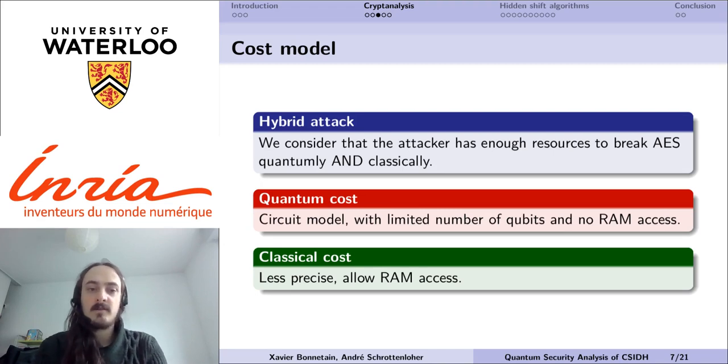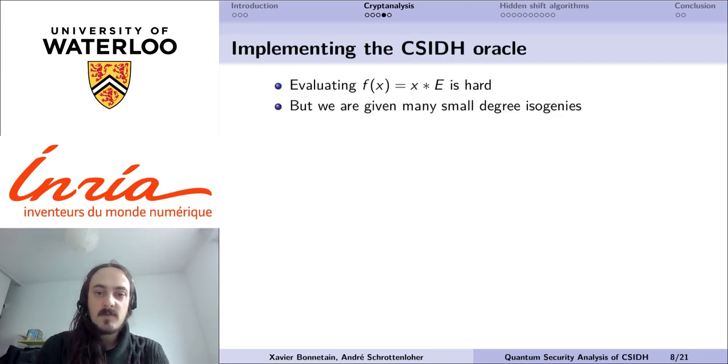For more detailed cost metrics, for the quantum part of our computations, we consider the circuit model. We try to have a limited number of qubits, as limited as possible, and we do not consider quantum RAM access, contrary to, for example, what Peikert has proposed in his analysis of CSIDH. For the classical cost, we allow ourselves to be slightly less precise in the estimate, and we allow classical RAM access.